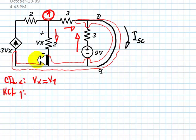for node number one: current going in is 3Vx, which equals the current coming out, V1 over 2 plus, in this case,